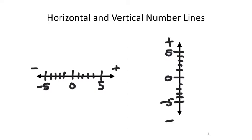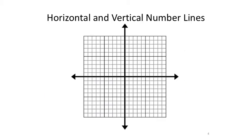The coordinate grid is just a combination of these two number lines. We have this vertical number line, and for now each line is 1, so 1 through 10 positive and 10 negative for the horizontal, and 10 up and 10 down for the vertical number line as well.